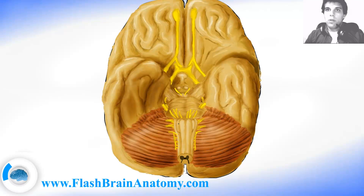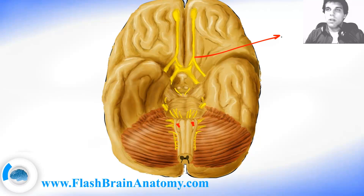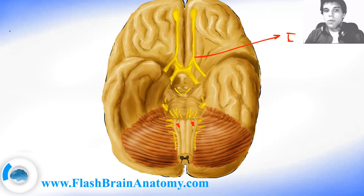Here we only have the hypoglossal nerve between the olivary bodies and the pyramids. The first cranial nerve is the olfactory nerve, and it is important for the sense of smell.